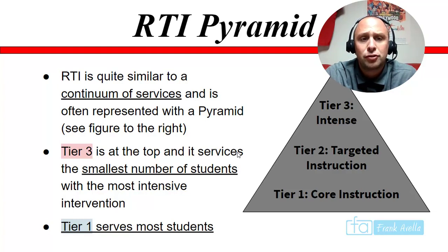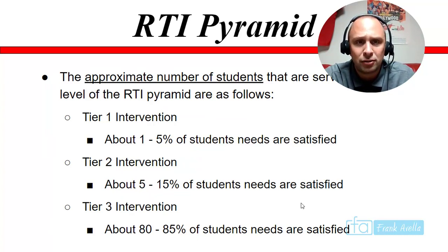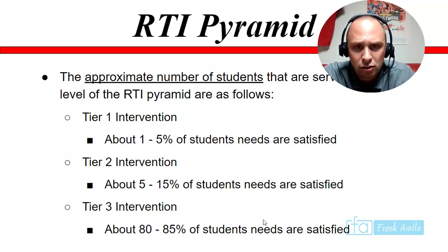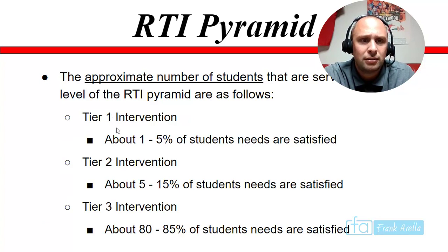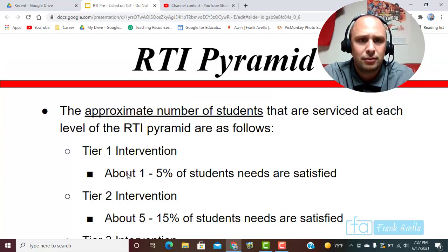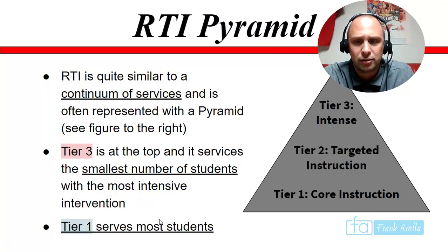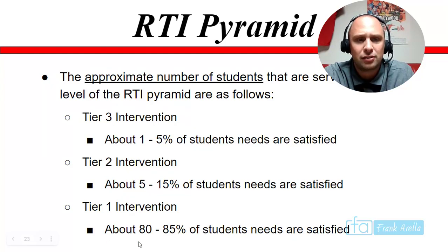Tier three at the top has the smallest number of students but is the most intensive. Tier one serves the most students. The approximate percentages of students served at each level are: tier one serves 80 to 85 percent of students, tier two serves five to 15 percent, and tier three serves one to five percent. — The speaker corrected an inversion in the original slide to reflect these accurate numbers.